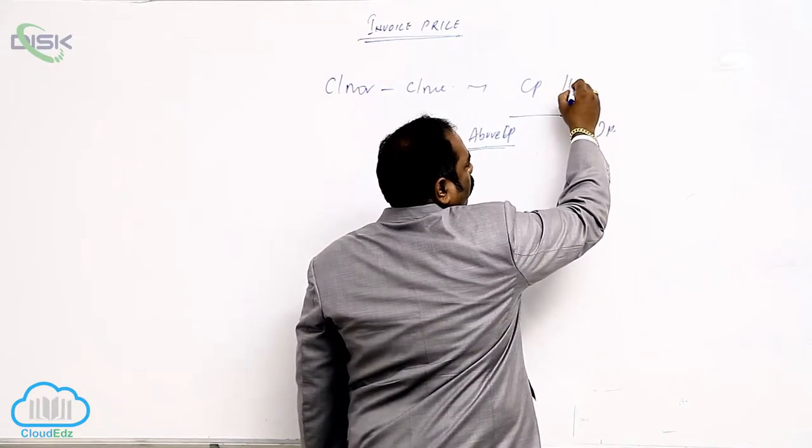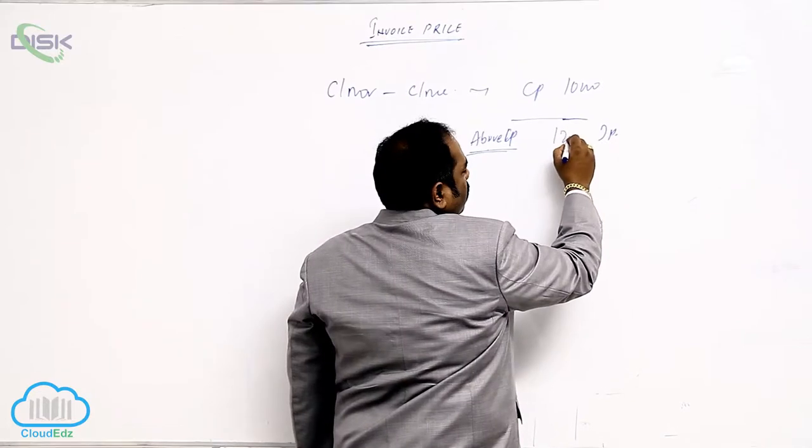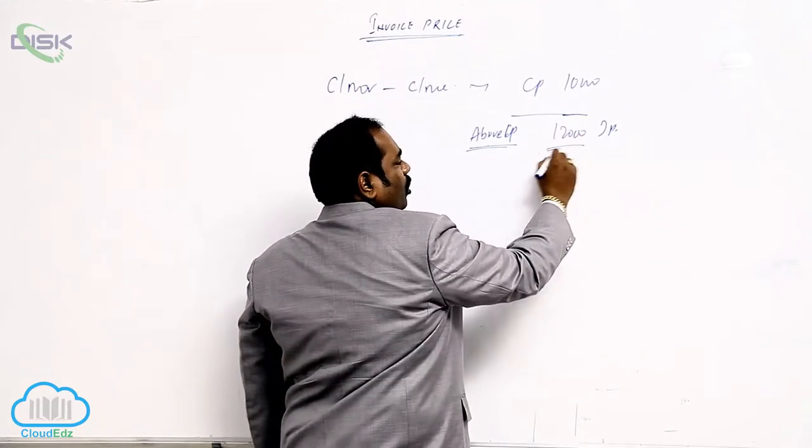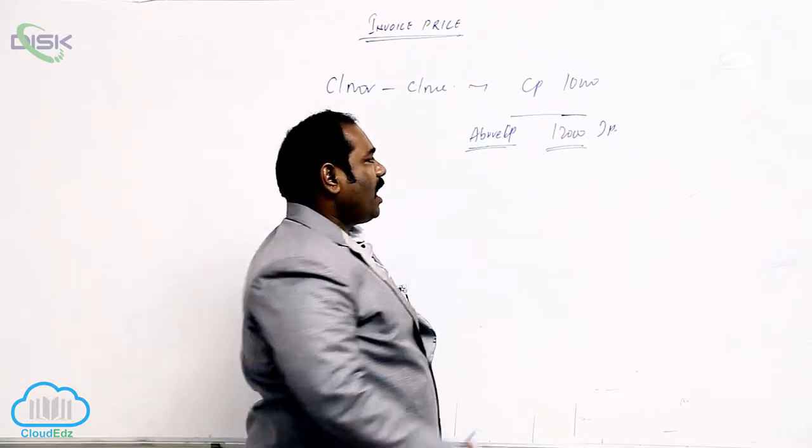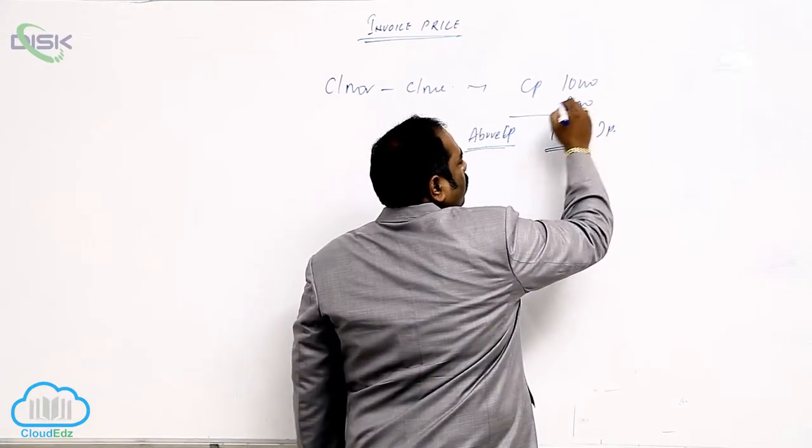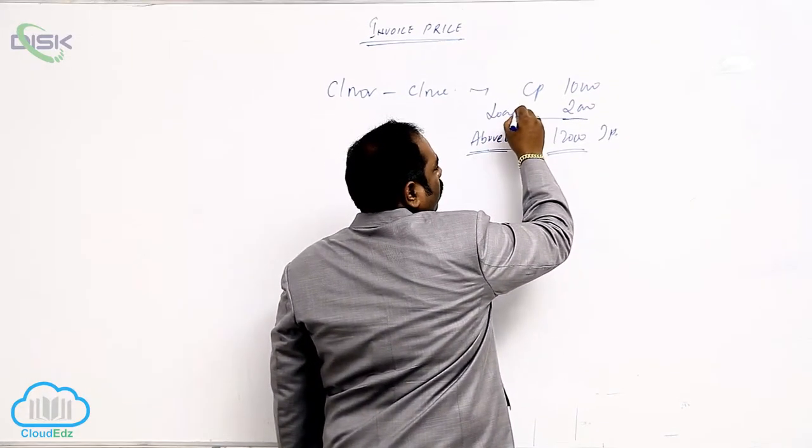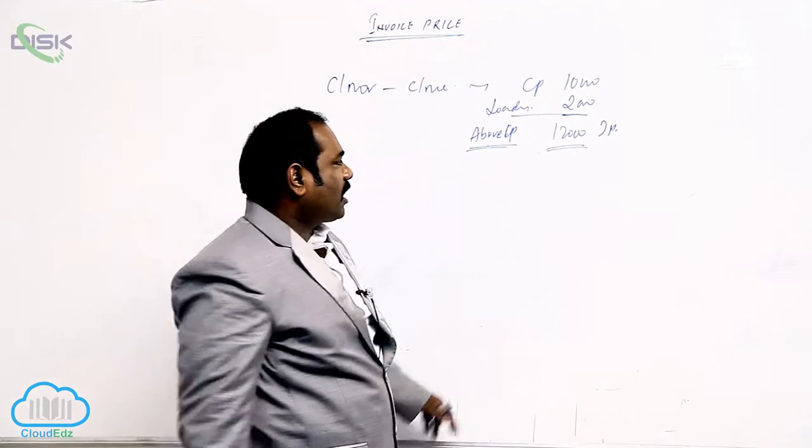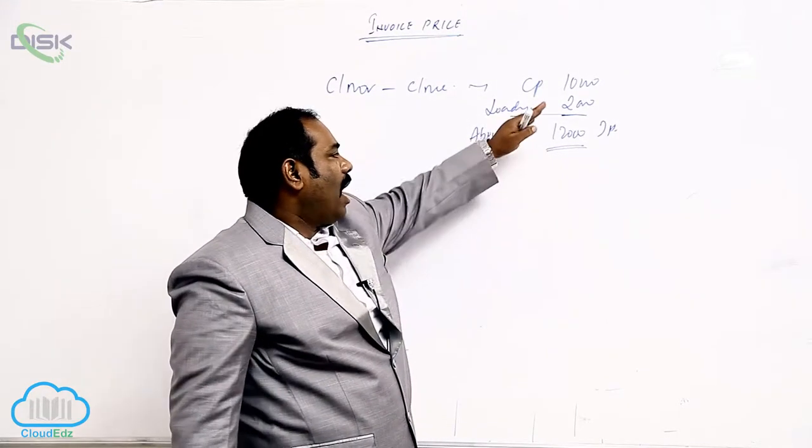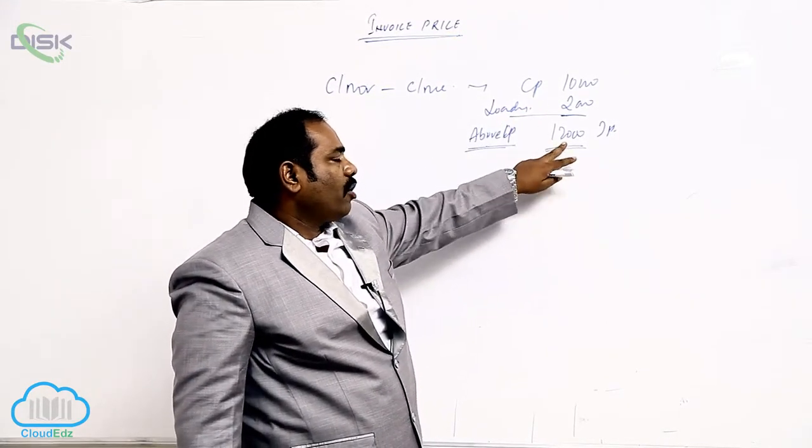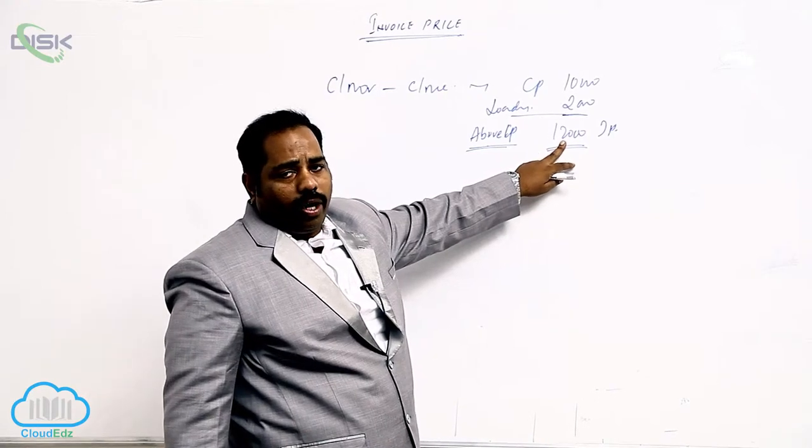Suppose the cost price of goods is 10,000 and the consigner is sending at 12,000 to the agent. He is adding something extra. This extra is called loading. When you add extra price, whatever extra you are adding, that is called the invoice price.